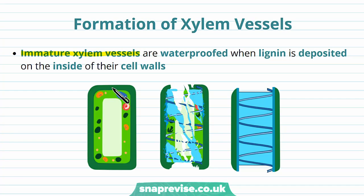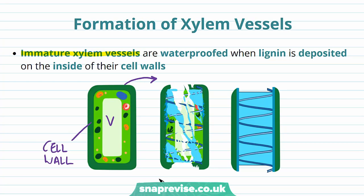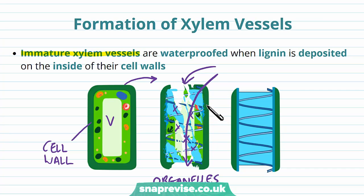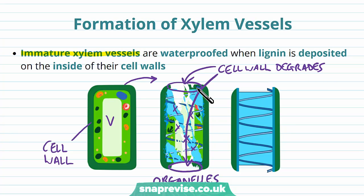Thinking of it as a stepwise process: we start with a living cell that has a cell wall, a vacuole, and various organelles such as peroxisomes, the nucleus, and chloroplasts within the cytoplasm. Over time, the cell begins to die and the organelles start to break down as different enzymes degrade them into basic products. The cell wall at either end begins to degrade, but the cell wall at the sides remains, giving structure and rigidity while allowing water to flow freely from one end to another without being impeded.